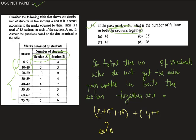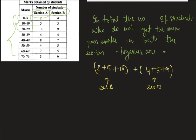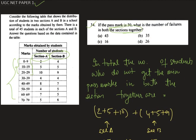And 4 plus 5 plus 9, this is for section B. Therefore in total the number of students will be 17 here and 18 here, therefore 35. Hence B is the correct answer.